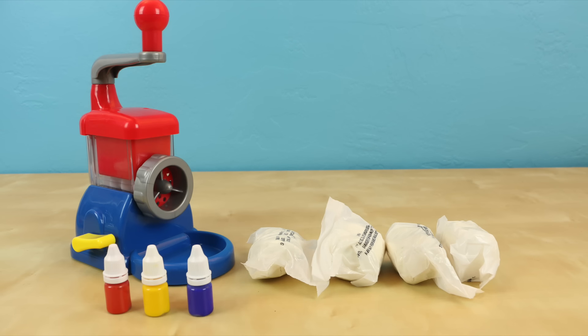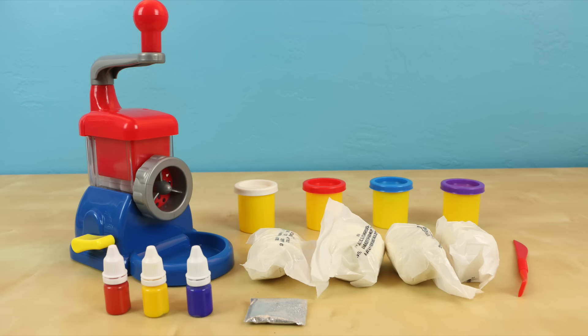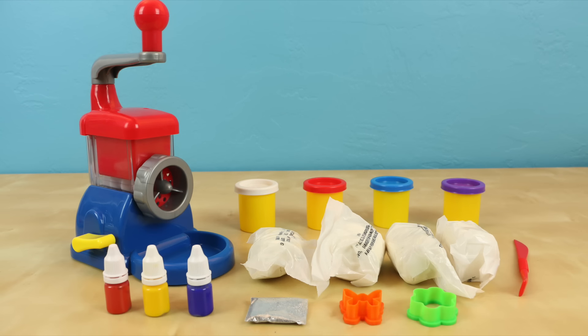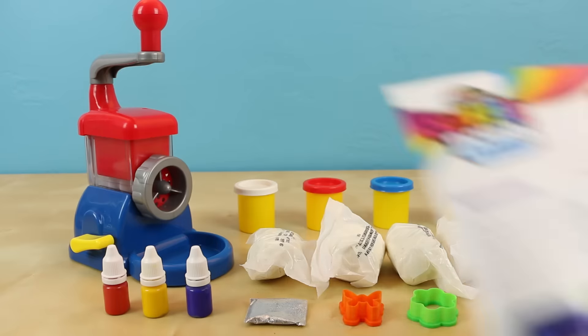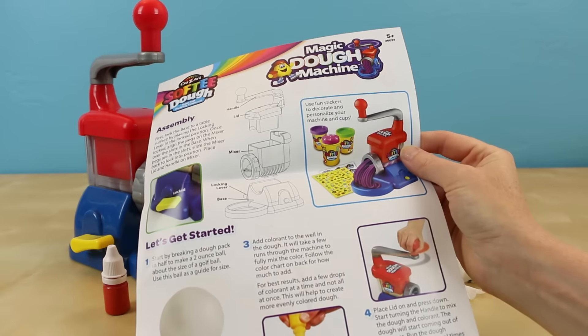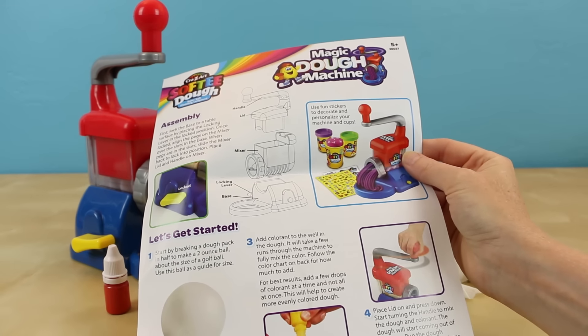They also give you four empty cups with lids for your softie dough, one plastic cutting tool, a small bag of glitter, two tiny cookie cutters, two sheets of stickers, and some directions on how to use your machine and how to clean your machine.